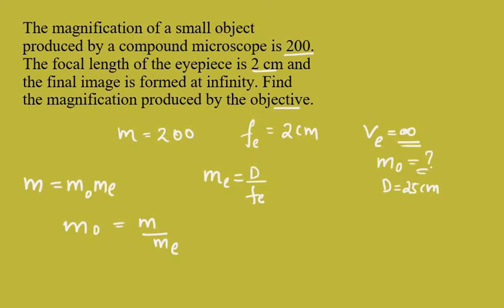Let us substitute the values. Mo will be equal to 200 divided by Me, which is d by Fe, so 25 divided by 2. This gives us 200 times 2 divided by 25, which equals 16. So the magnification produced by the objective lens is 16.